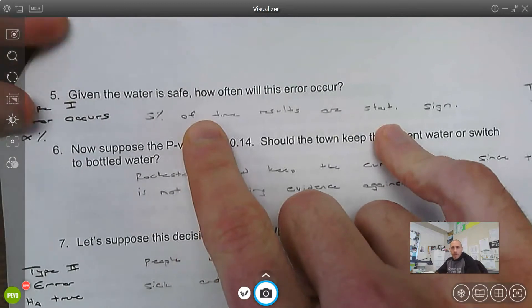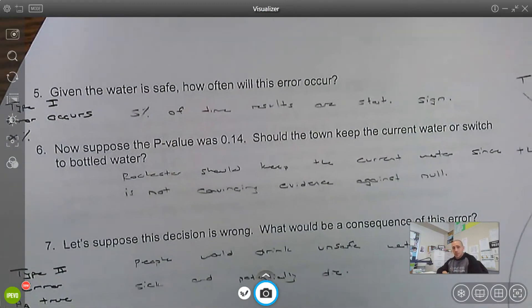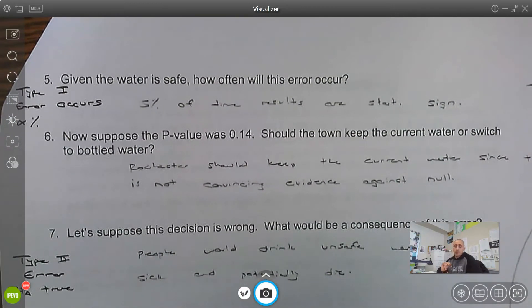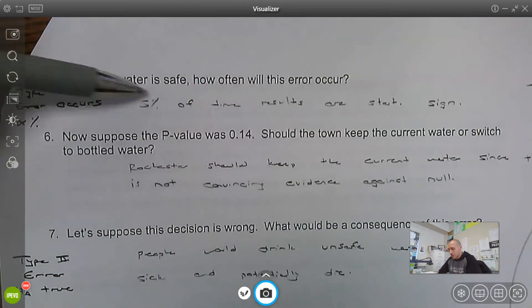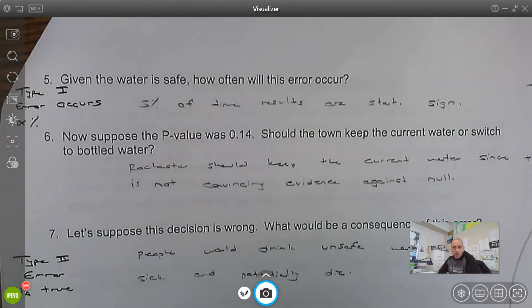Given the water is safe, how often will this occur? I'm assuming you were like, what? I have no idea how to do this. Maybe you figured it out. That's going to happen 5% of the time. That's the probability of we make what's called a Type 1 error. And we'll delve into that a little bit more.